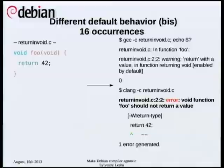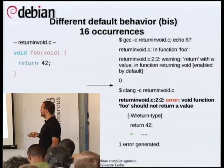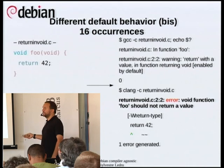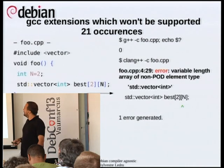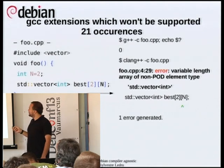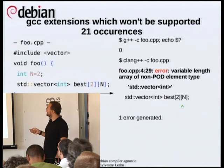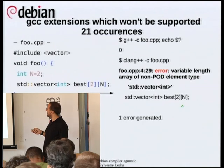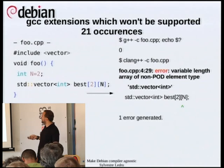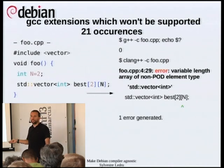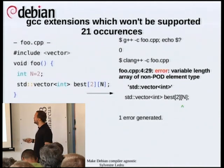We also have the other way around: a void function which is returning a value. GCC complains but doesn't treat it as an error, while Clang does. Obviously it is an error, but this one is not such a big deal. This other issue is a GCC extension — in C++, you can define a variable size array, and Clang developers don't want to support such things; they think we should only use the standard.